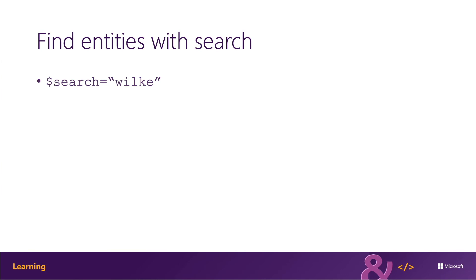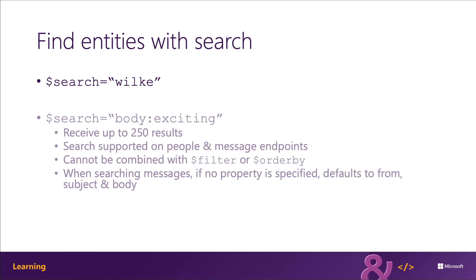Developers can also use search to search for content against the people and message endpoints. Search is limited to returning 250 results, and it can't be combined with things like filter and order by. When searching against a messages endpoint, if no property is specified, it's going to default to searching the from, subject, and body properties on the emails. You can search for specific fields as well, such as the CC property.